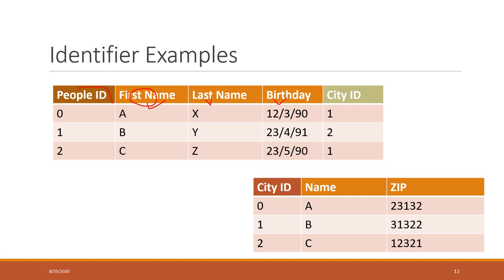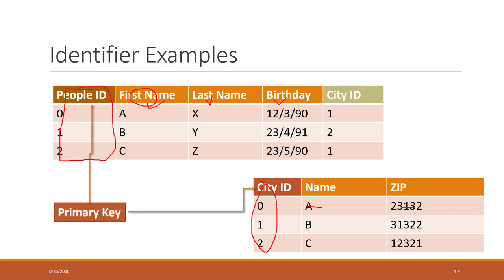That's why we assign each person a unique ID. Each person will have a unique ID that serves as the primary key. For the same reason, we also have a city table with the name of the city and the zip code, and each city has its own unique state ID column that will serve as the primary key. So in this case, we have two primary keys: one is the people ID on the people table, and another is the state ID on the state table.